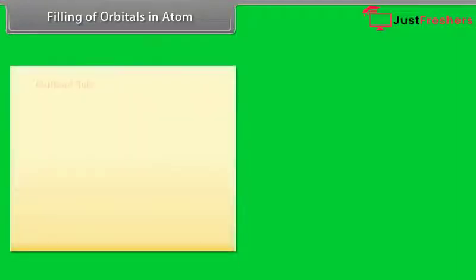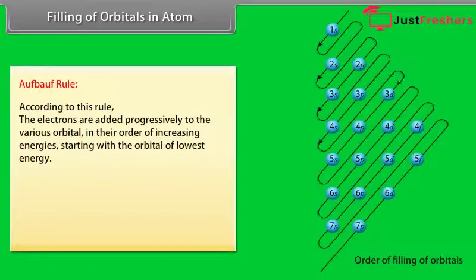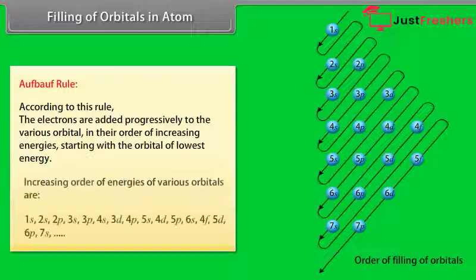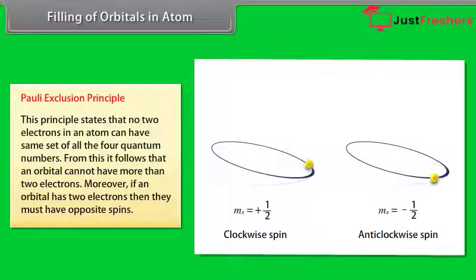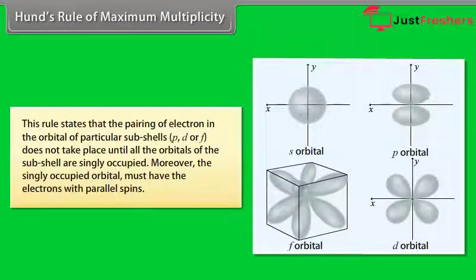Filling of orbitals in atoms — Aufbau Rule: According to this rule, electrons are added progressively to the various orbitals in their order of increasing energies, starting with the orbital of lowest energy. Pauli's Exclusion Principle states that no two electrons in an atom can have the same set of all four quantum numbers. From this, it follows that an orbital cannot have more than two electrons, and if an orbital has two electrons, they must have opposite spins.